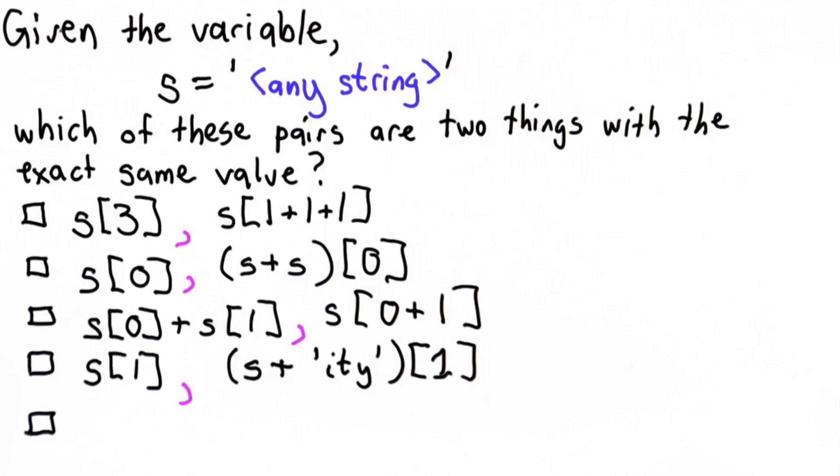And for the fifth and final choice, we have s index -1. Remember the negative indexes go from the back of the string, paired with (s+s) index -1.